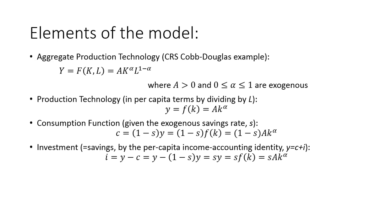The next component is investment. Through the GDP accounting identity, output equals consumption plus investment — since we have no government and no net exports in this model. Substituting through using the consumption function, we find that investment is equal to savings, which is a familiar result from the loanable funds model.